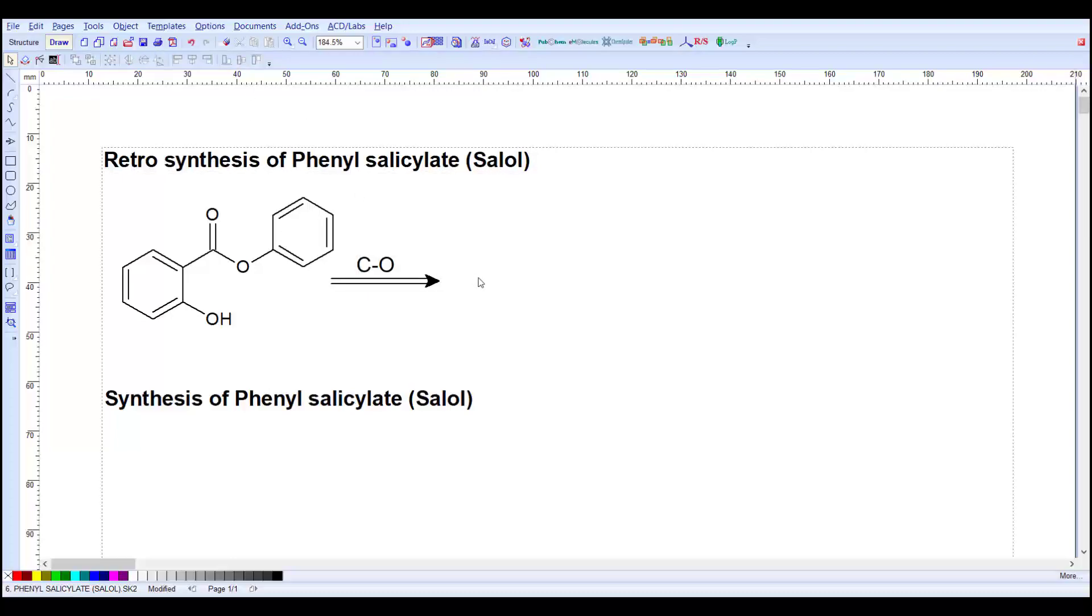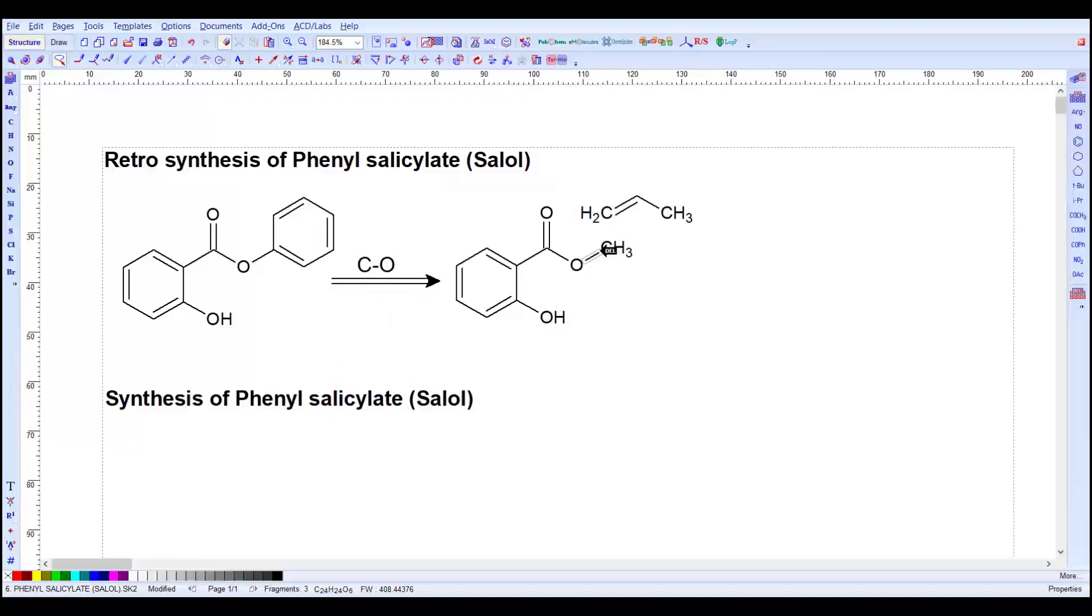Now with the disconnection we got the salicylic acid. For our convenience we have to copy this and paste it here and delete this benzene ring. When we delete this benzene ring we have a salicylic acid group here.